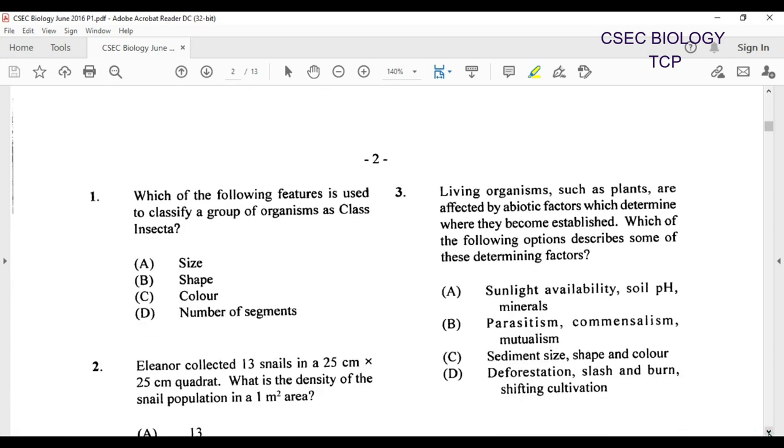Let's look at question number one. Which of the following features is used to classify a group of organisms as class insect? Please be reminded that an insect would have body divided into three parts: head, thorax, and abdomen. So size would not be applicable, shape would not be applicable, the color neither would that be applicable. So the most suitable answer for this question is going to be D.